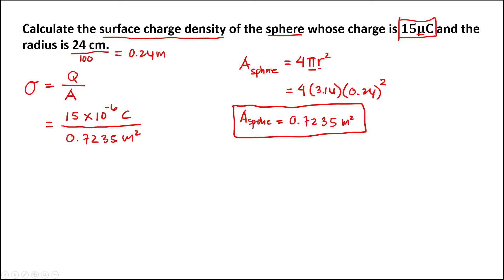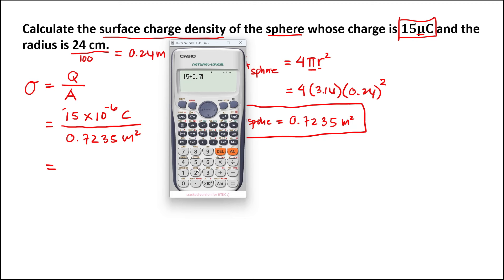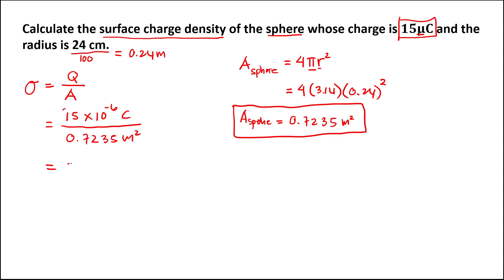To find the surface charge density, we have 15 divided by 0.7235, which equals 20.73 times 10 to the power negative 6 Coulombs per meter squared. To convert this to standard scientific notation, we move one place to the left, which is plus 1, so the surface charge density equals 2.073 times 10 to the power negative 5 Coulombs per meter squared.